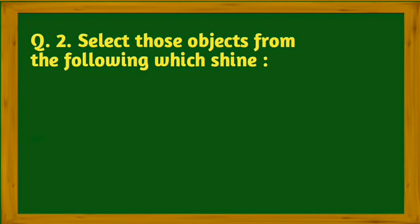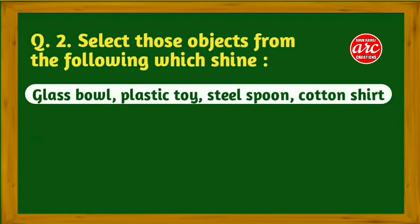Question two: Select those objects from the following which shine: glass ball, plastic toy, steel spoon, cotton shirt. Answer: glass ball and steel spoon.